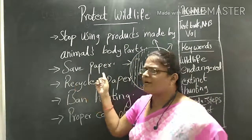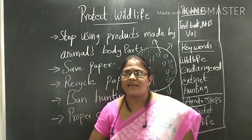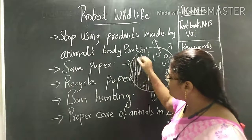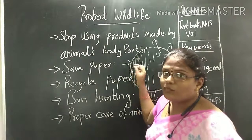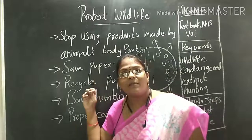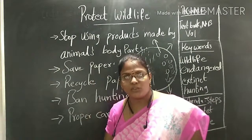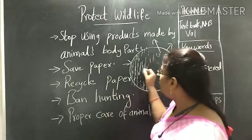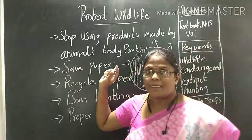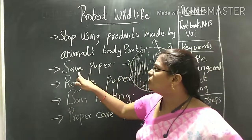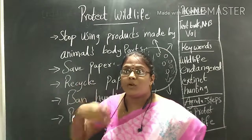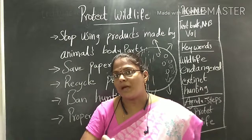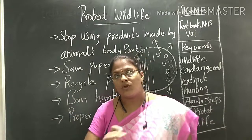We should also save paper. If we cut the trees, animals which eat plants won't have food to eat, so those plant-eating animals will die. If we save paper, the production of paper will be reduced. If paper production is reduced, cutting of trees will also be reduced, and plant-eating animals will survive.